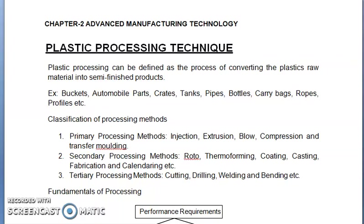Plastic processing can be defined as the process of converting the plastic's raw material into semi-finished product. For example, we use in day-to-day life different plastic products like buckets, automobile parts, threads, drinks, pipes, bottles, carry bags, ropes, profiles, etc.